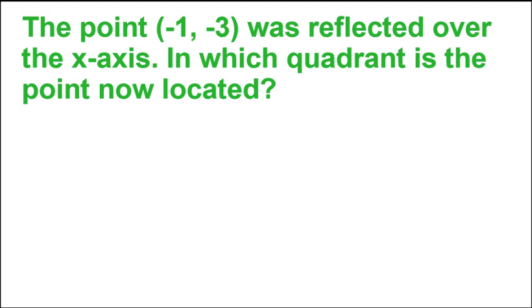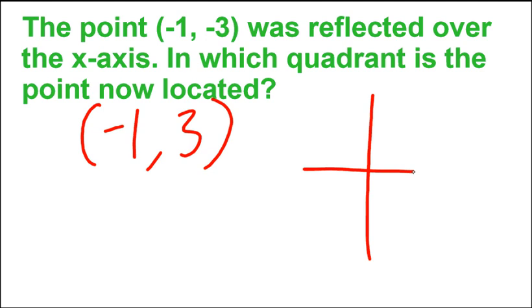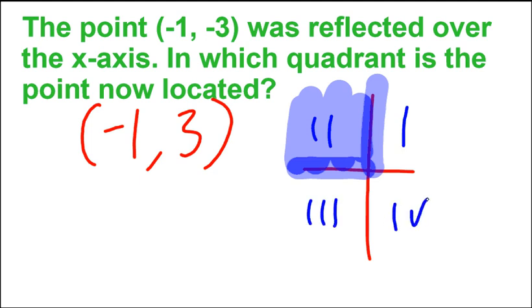Quadrant 2 is correct. After the reflection, x stays the same, y changes signs, so we do get (-1,3). Negative x value is to the left, positive y up, so that puts us up there. That is quadrant 2.